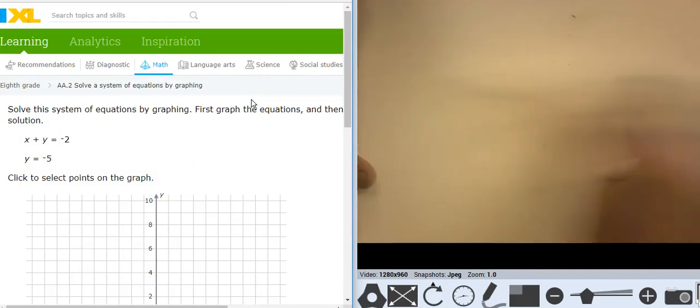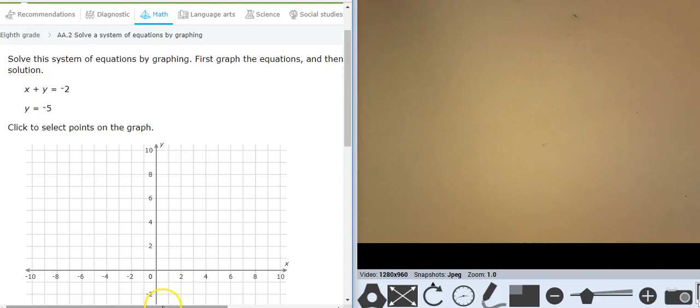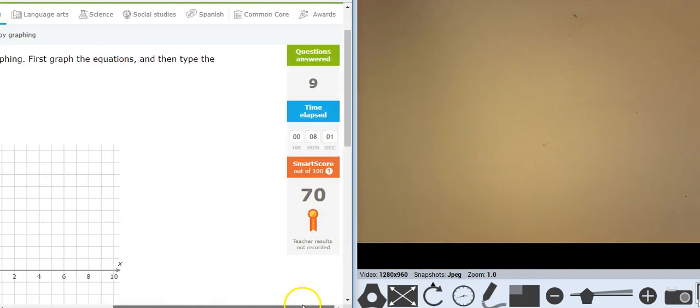And let's see. What's my smart score? I feel like I'm above 70. Am I above 70? Ah, I'm just at 70. Okay.